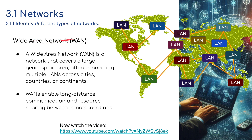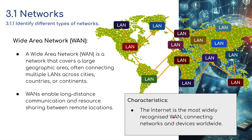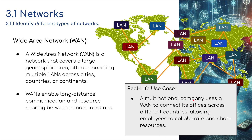A WAN — wide area network — is basically a connection of LANs. It covers a very large geographical area, often connecting multiple LANs across cities, countries, or even continents. WANs enable long-distance communication and resource sharing between remote locations. Characteristics: it covers a large geographic area, has slower data transfer speeds compared to a LAN, and can be public (e.g. the internet) or private (e.g. a corporate WAN). The internet is the most widely recognized WAN. An example: a multinational company uses a WAN to connect its offices across different countries, allowing employees to collaborate and share resources.